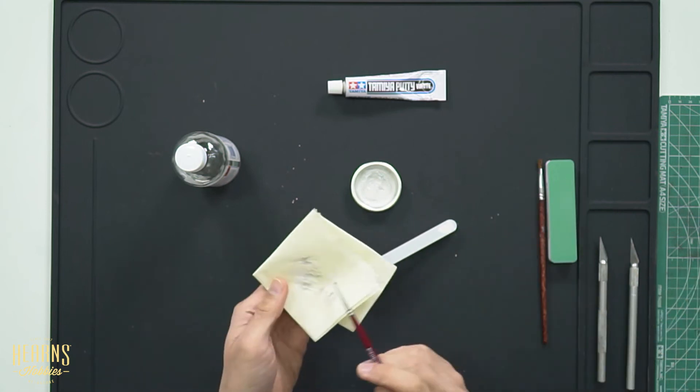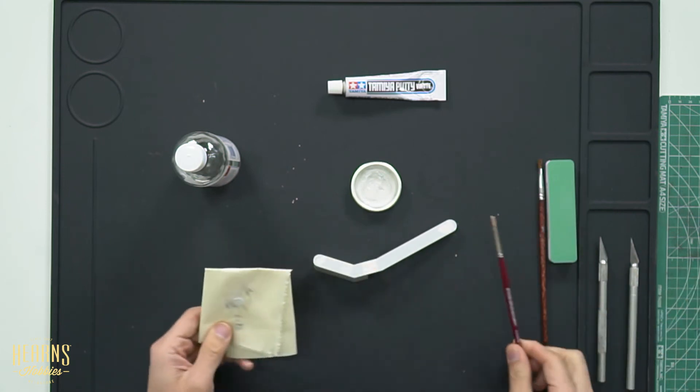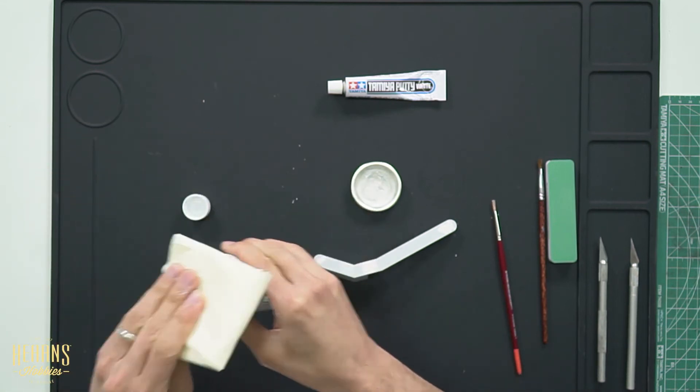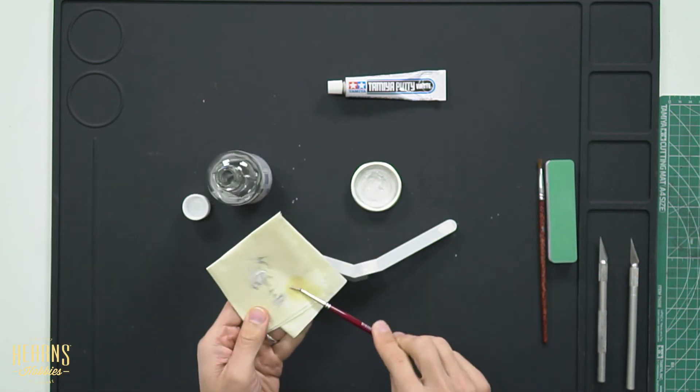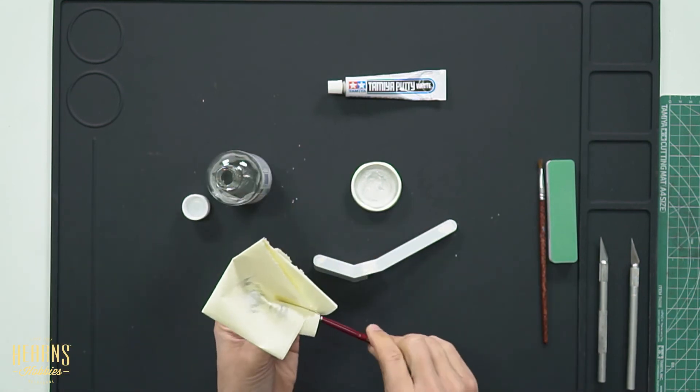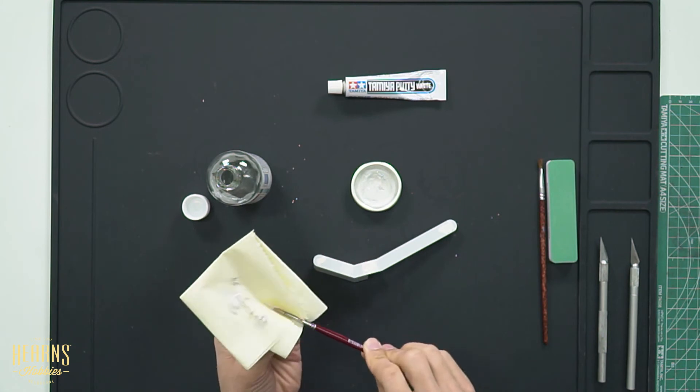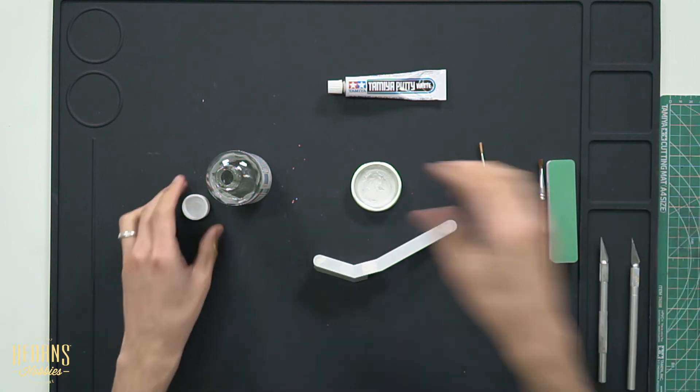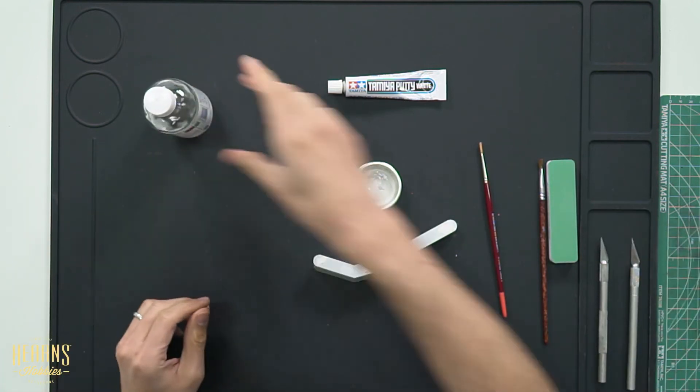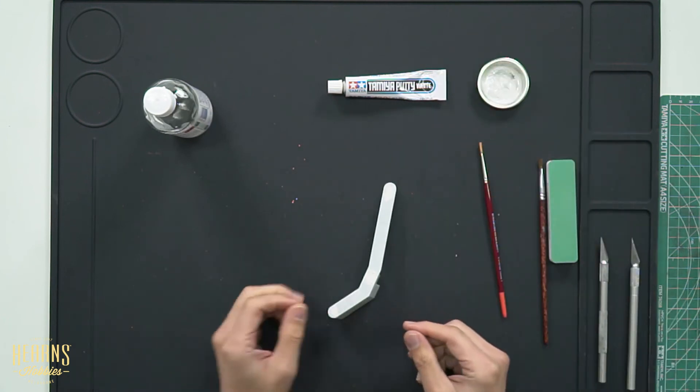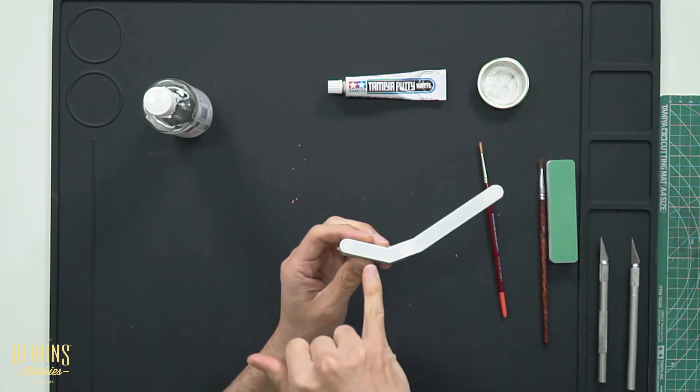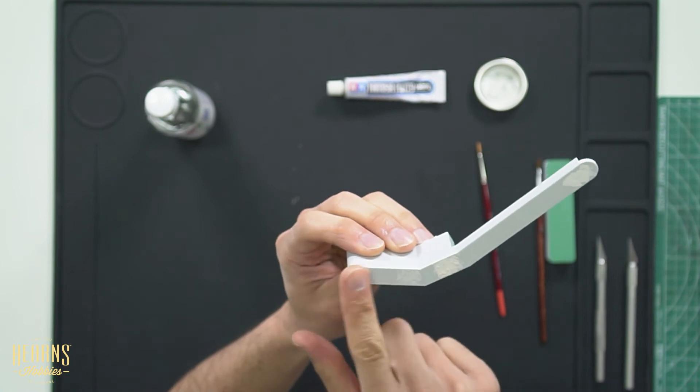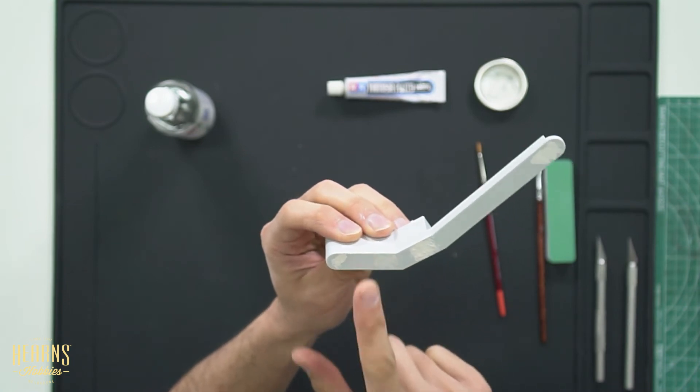I'll just quickly clean off my brush. So again, let's just get a bit of thinner. Cap that off. Don't need that. Pop that over here. So just to imagine, this is the putty that we applied, which is mixed with a thinner.